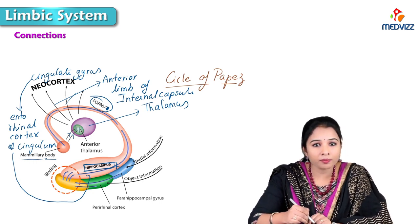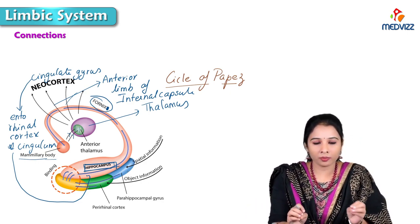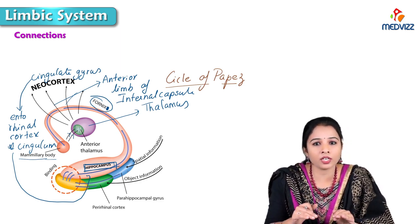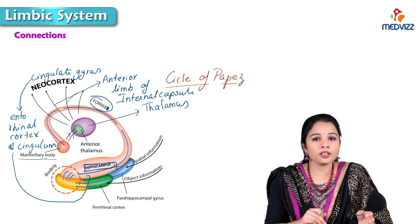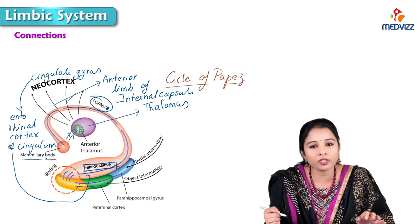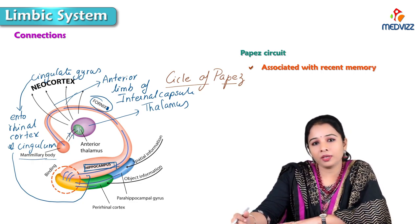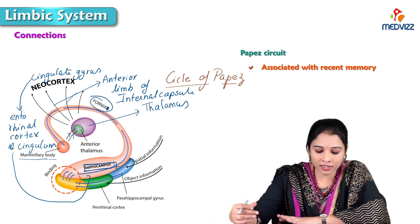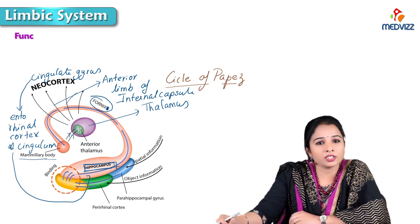To repeat: the Papez circuit starts with pyramidal cells of the hippocampus — their efferents form the fornix, which terminates in the mammillary bodies of the hypothalamus. Via the mammillothalamic tract it reaches the anterior thalamic nuclei, then through the anterior limb of the internal capsule to the cingulate gyrus, then the entorhinal cortex or cingulum, and finally back to the hippocampus. This is called the mammothalamic-cingulate tract, and the Papez circuit is associated with recent memory — which is processed to form long-term memory.